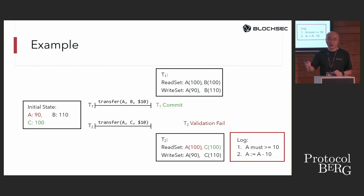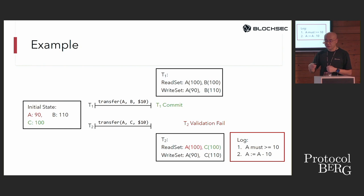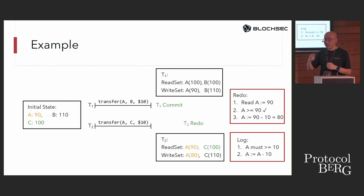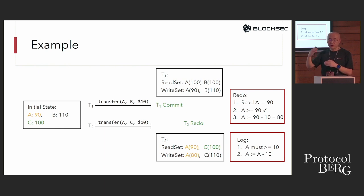For example, with transactions T1 and T2 — the validation of T2 fails because of a conflict on the state of account A. During execution, we maintain operation logs. Using these logs, we can redo only part of the operations in T2, using the latest value of account A (balance of 90 instead of 100), and then commit the results of T2 to the world state.